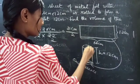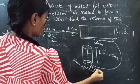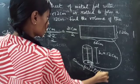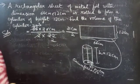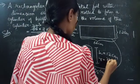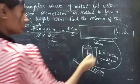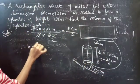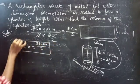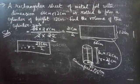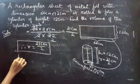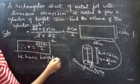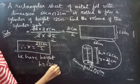So the radius r equals 21/2 cm, or we could write it as 21 by 2 cm. We already have the height value: h equals 12 centimeter.